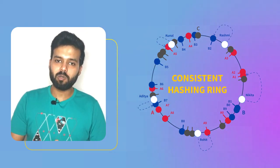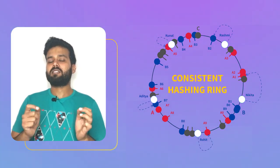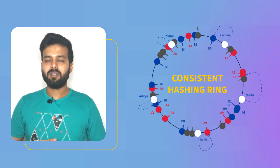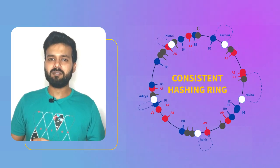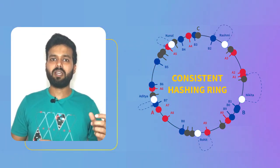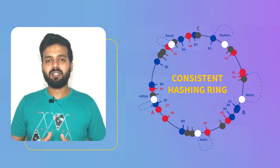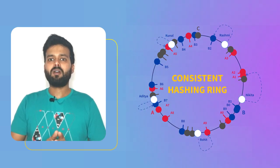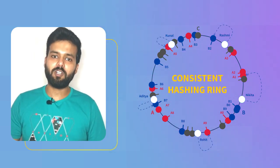And if you notice closely, all servers are still holding 1 by n amount of data. Earlier also they were holding 1 by n. When they had 3 servers, they were holding 1 third of the data. And then when we removed one server, every server is holding 50% of the data.